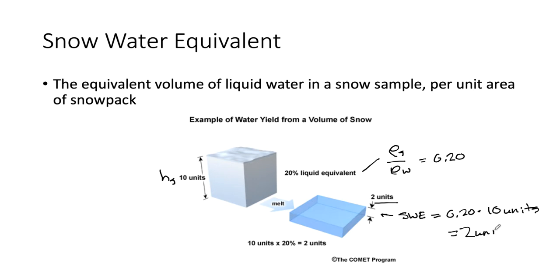That raises the question: where does this number come from? Is snow density always 20%? If we melted a foot of snow, would we always get about 20% of a foot in liquid water? The answer is no — we need to actually measure the snow density. And that is where a tool called a federal sampler comes in.